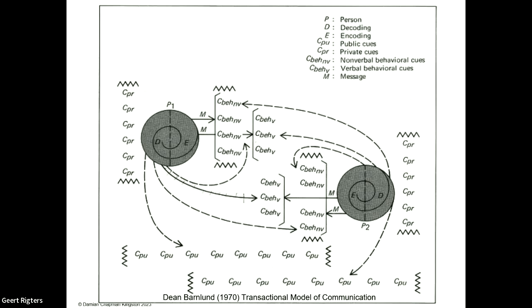Here we have Dean Barnlund's fascinating diagram from the 1970s — and isn't that incredible, from the 1970s — but within that cyclical process of conversation and learning you have the person, the decoding, the encoding, the public cues, the private cues, the non-verbal behavioural cues, the verbal behaviour cues, and the message. It's complex and it's exciting.